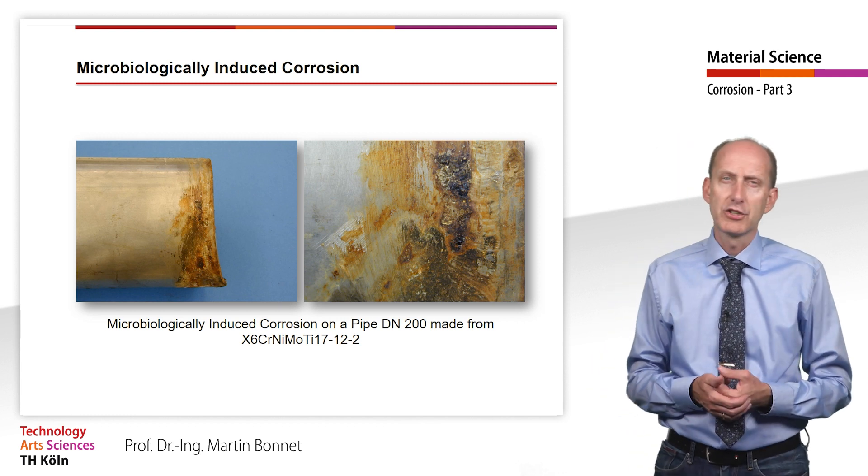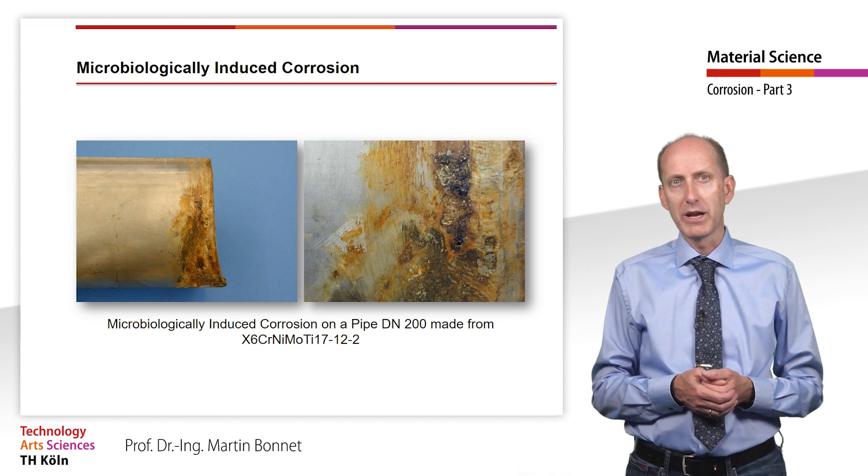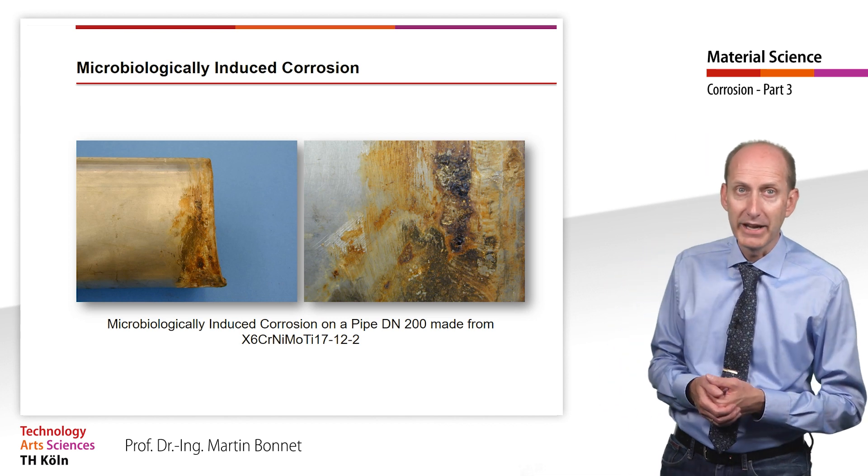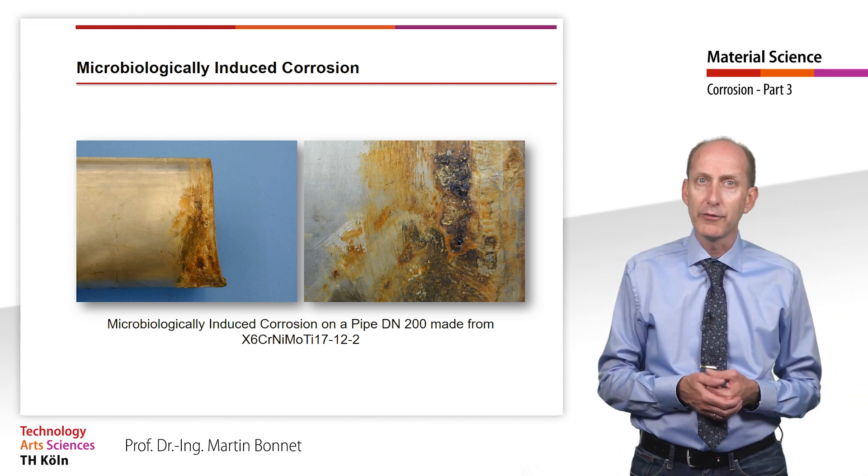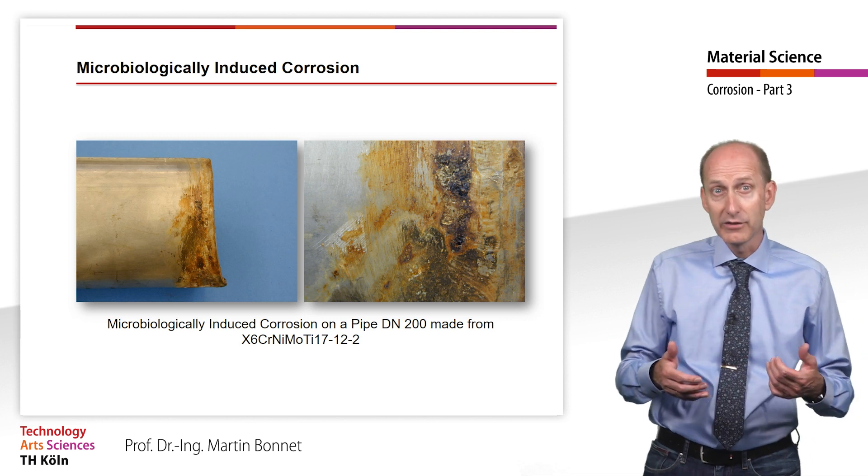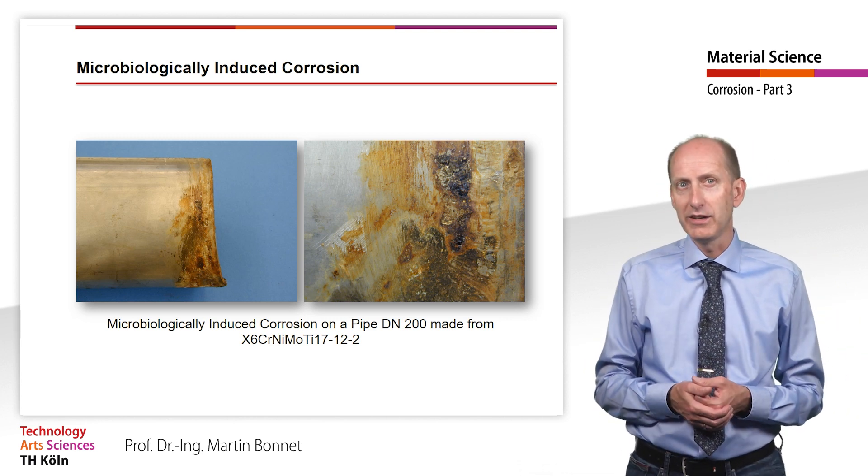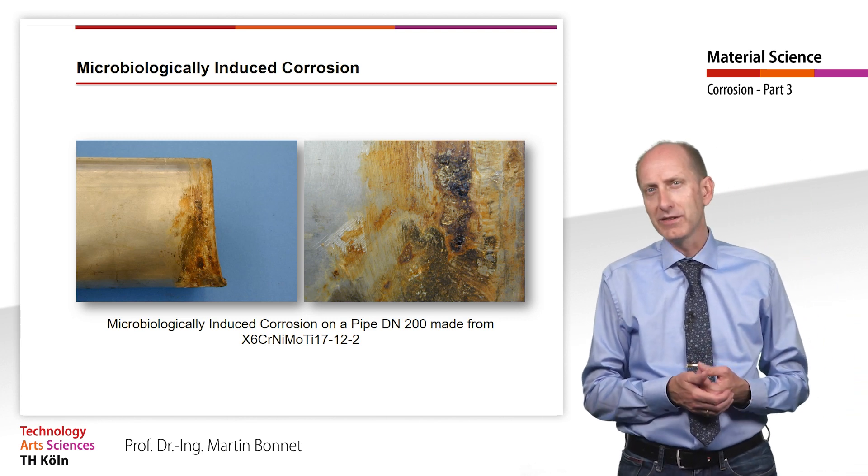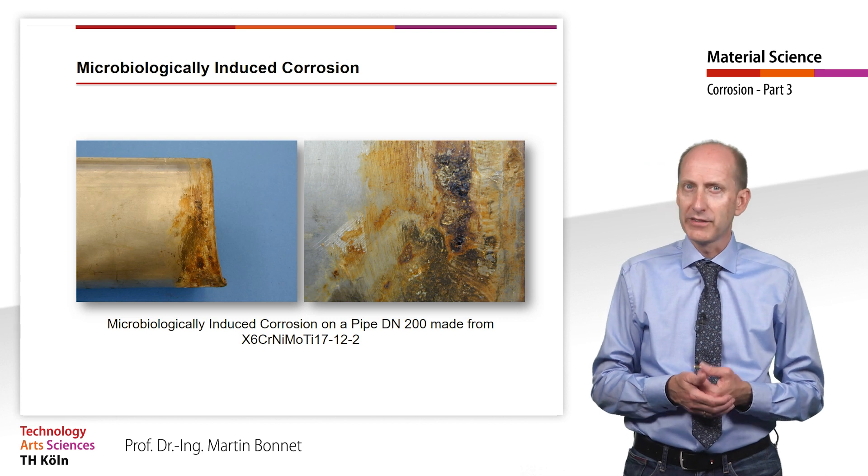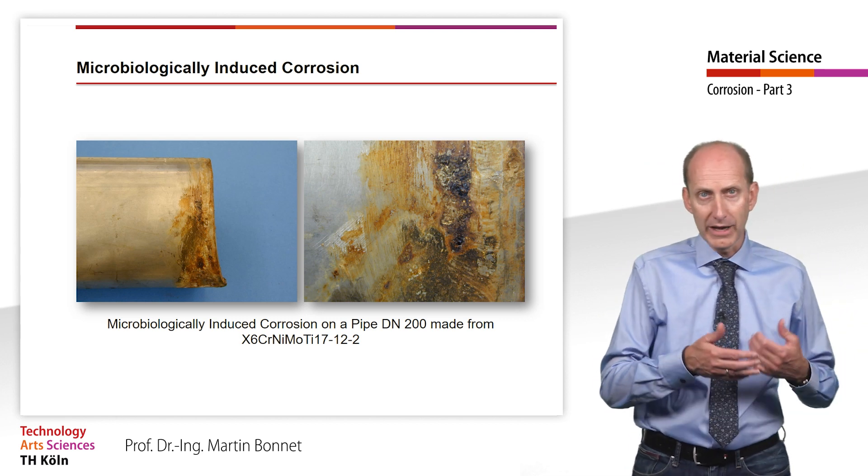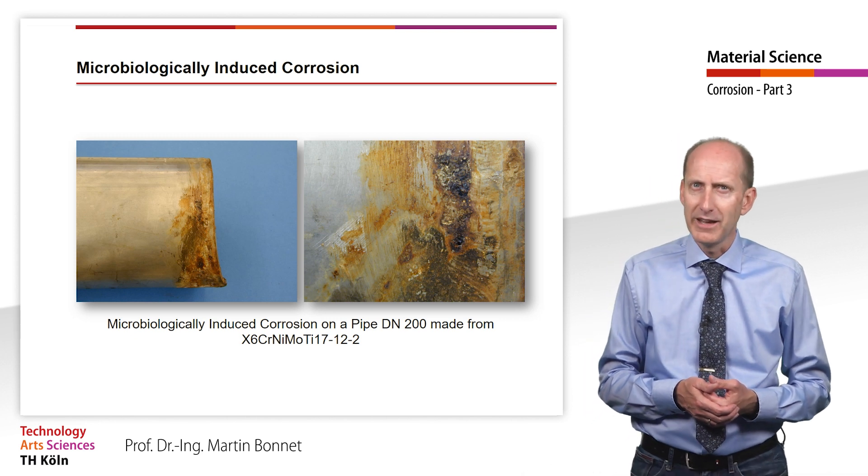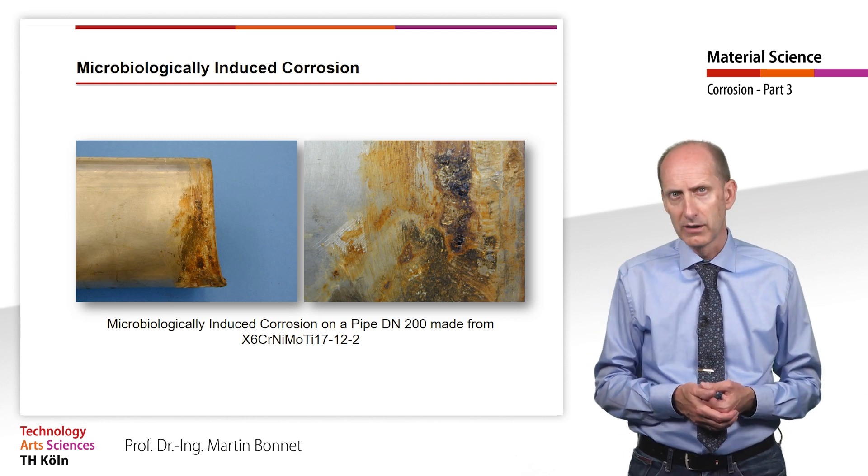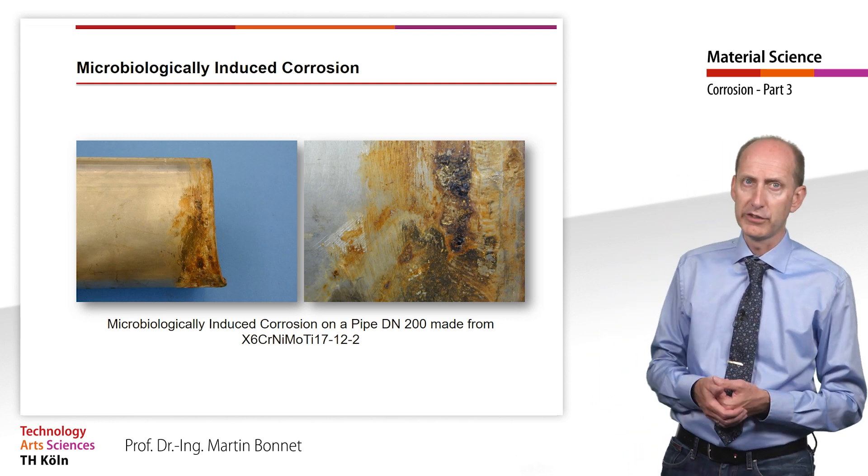These photos show a severe case of damage caused by microbiologically induced corrosion. In a wastewater treatment plant, the damage shown occurred after only half a year of use, despite the use of high-quality, high-alloy stainless steel. They used an X6-CRNI-MOTI-1712-2, that is a stainless steel with sufficient chromium, with enough molybdenum to prevent pitting corrosion, and with additional titanium to stabilize the steel against intergranular corrosion. So how could this severe damage have occurred?